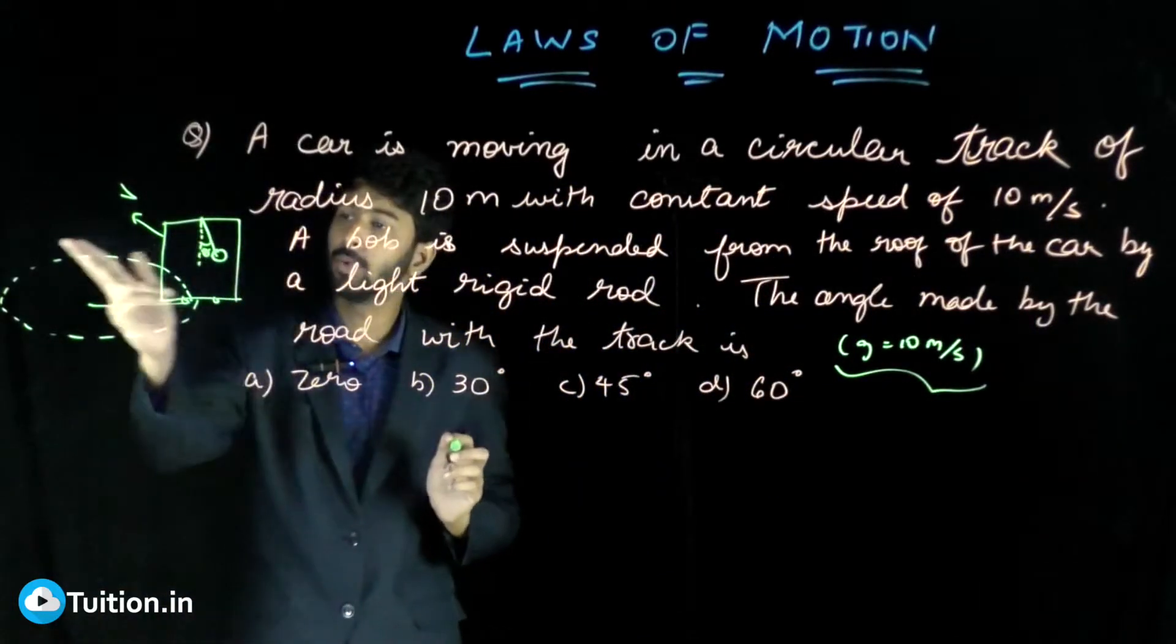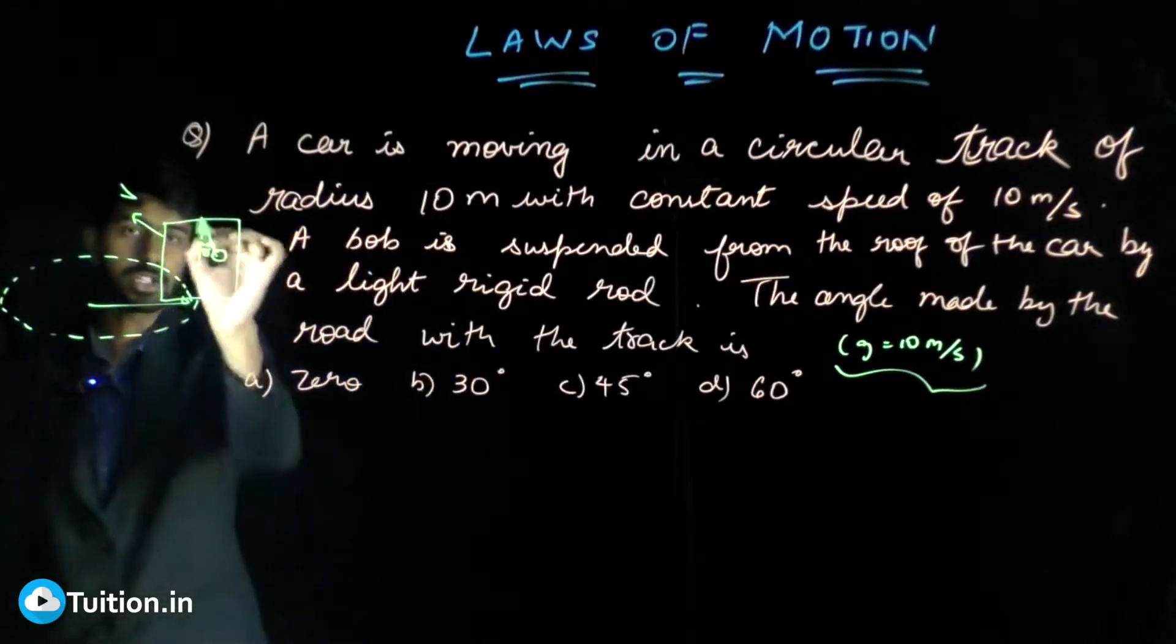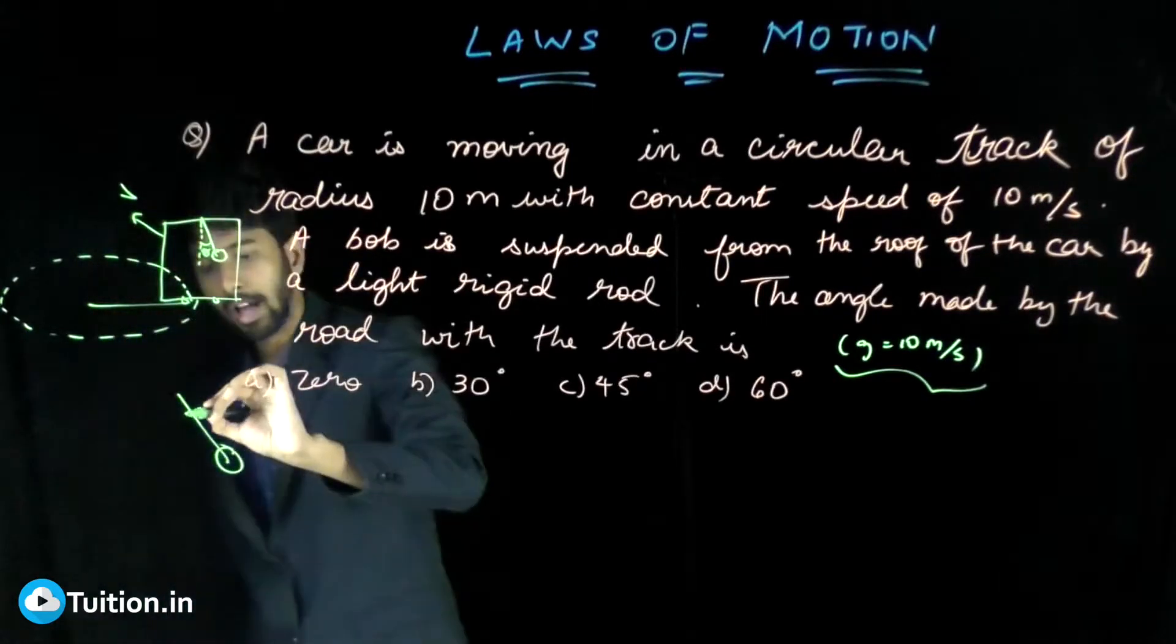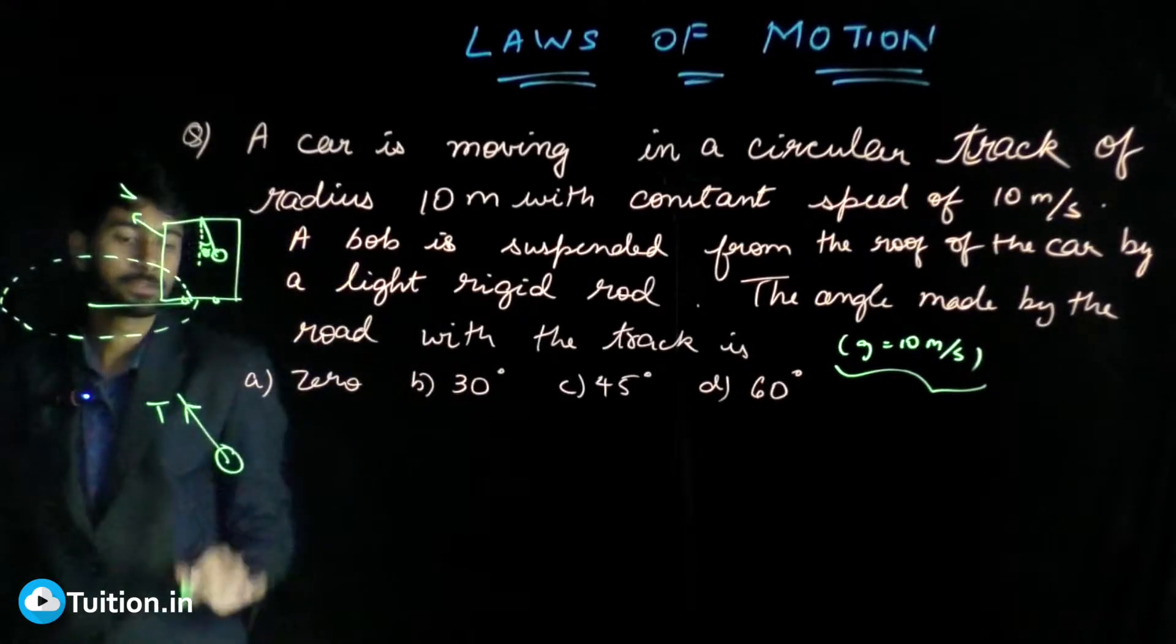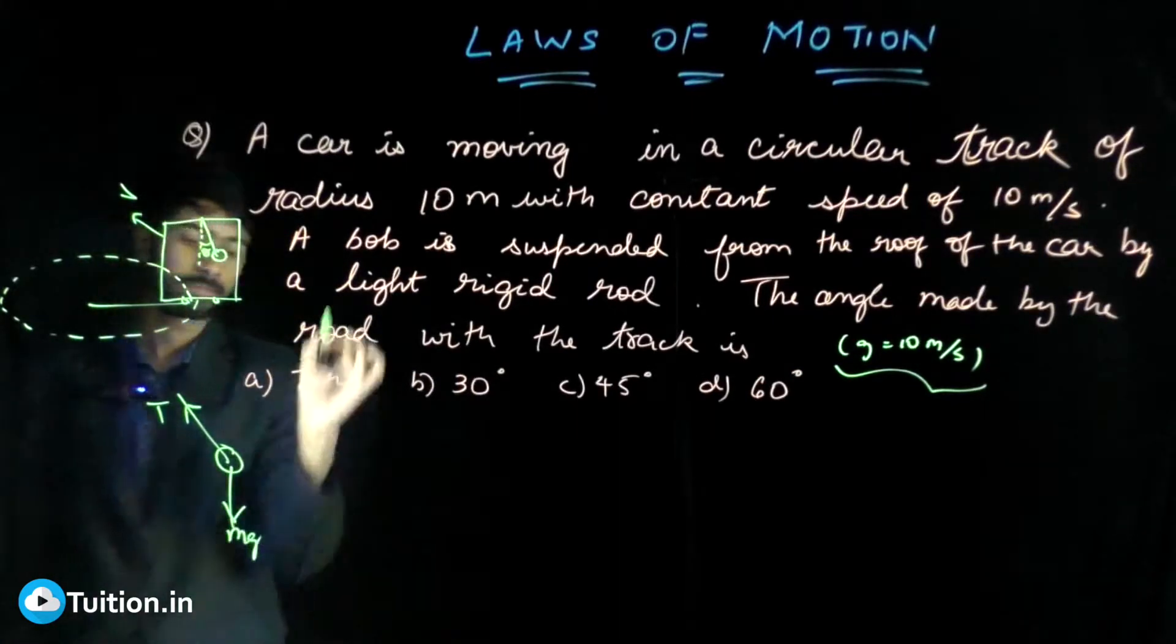Because the car is moving in circular motion, the bob is also moving in circular motion. If I just consider the bob now, let's look at the forces on the bob. You have tension, then you have mg.